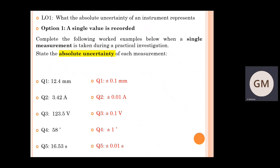The answers are as follows. Given that the absolute uncertainty is simply the resolution of the instrument: the first one is measuring to the nearest tenth of a millimetre — a vernier caliper — so the absolute uncertainty is plus or minus 0.1 millimetres. The ammeter measures to the nearest one hundredth of an ampere, so the absolute uncertainty is plus or minus 0.01 amperes. The voltmeter is measuring to the nearest one-tenth of a volt, so the absolute uncertainty is plus or minus 0.1 volts. The protractor goes to the nearest one degree, so the absolute uncertainty is plus or minus one degree. Finally, the time of 16.53 seconds is measured to the nearest one hundredth of a second, so the absolute uncertainty is plus or minus 0.01 seconds.